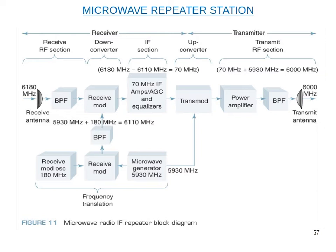In the IF Repeater, the received RF signal enters the receiver through the channel separation network and bandpass filter. The receive mode down converts the RF carrier to IF. The IF amplifier, automatic gain control, and equalizer circuits amplify and reshape the intermediate frequency. The equalizer compensates for gain versus frequency non-linearities and envelope delay distortion introduced in the system.